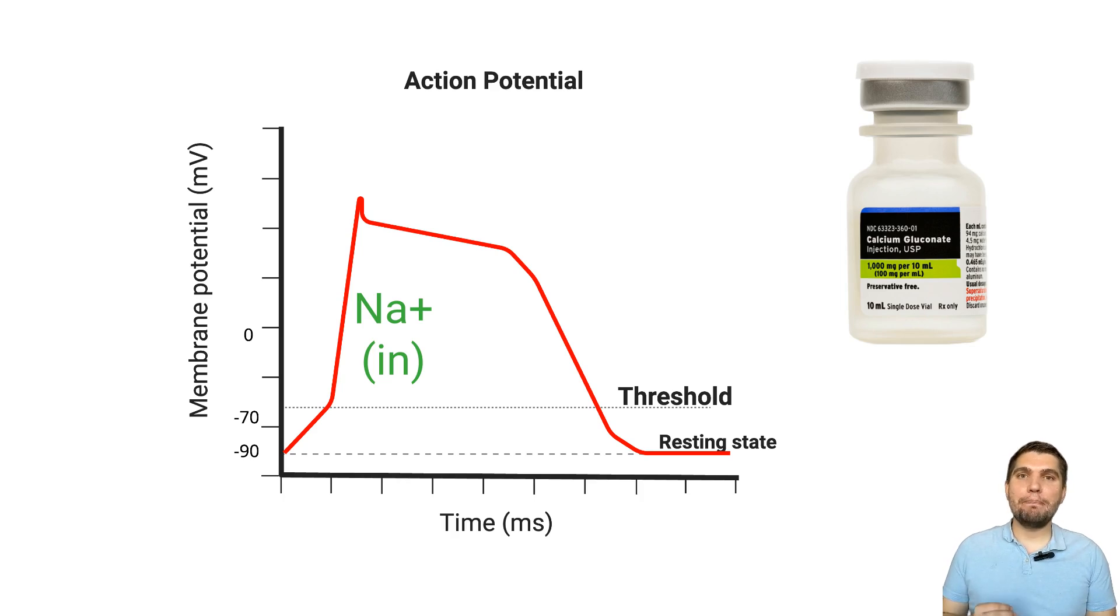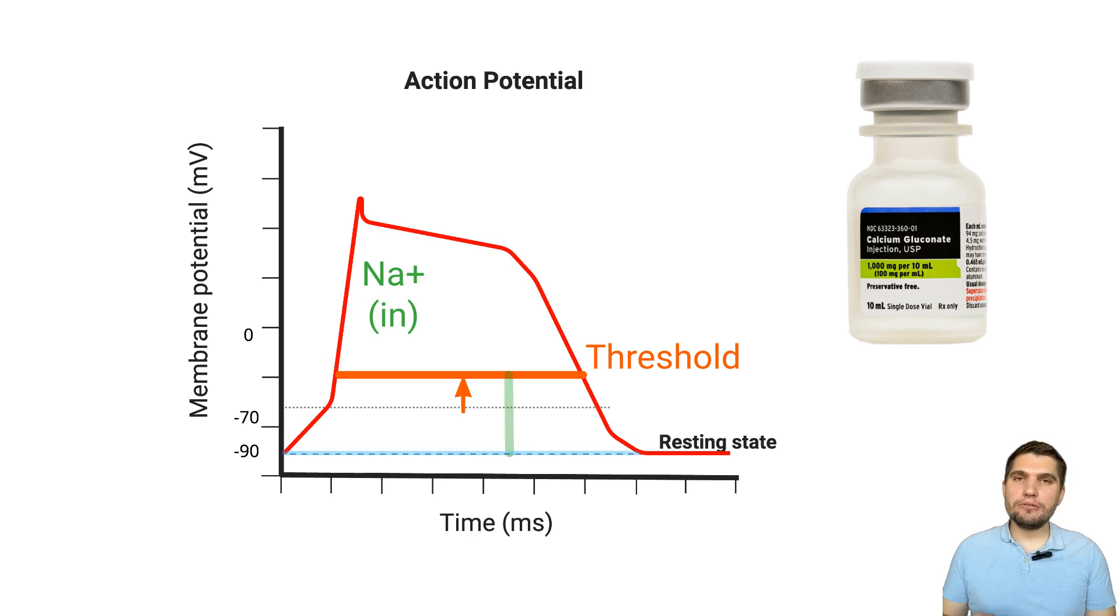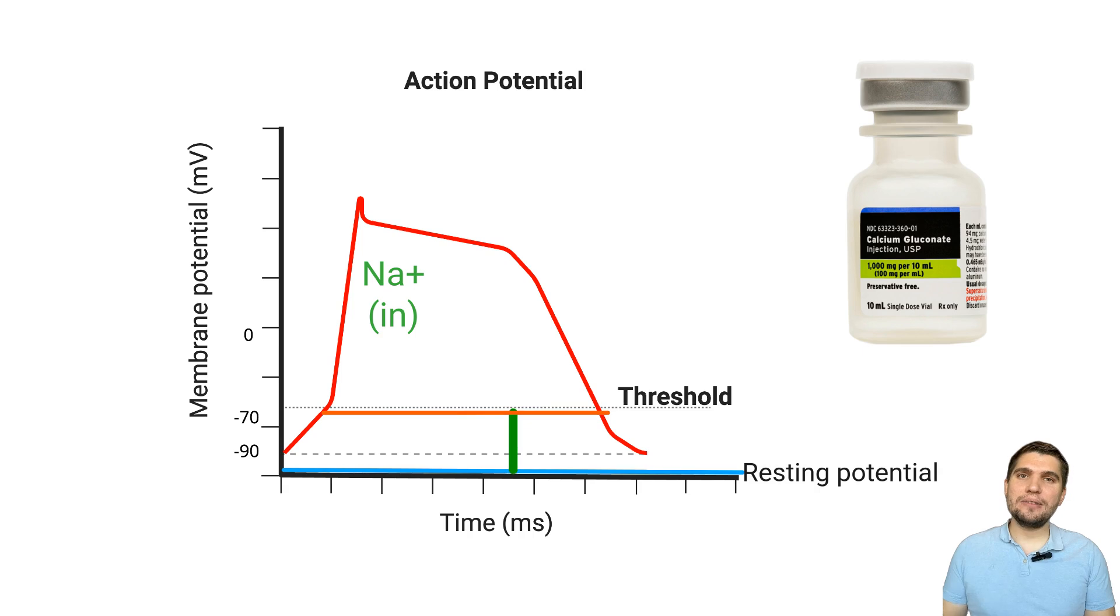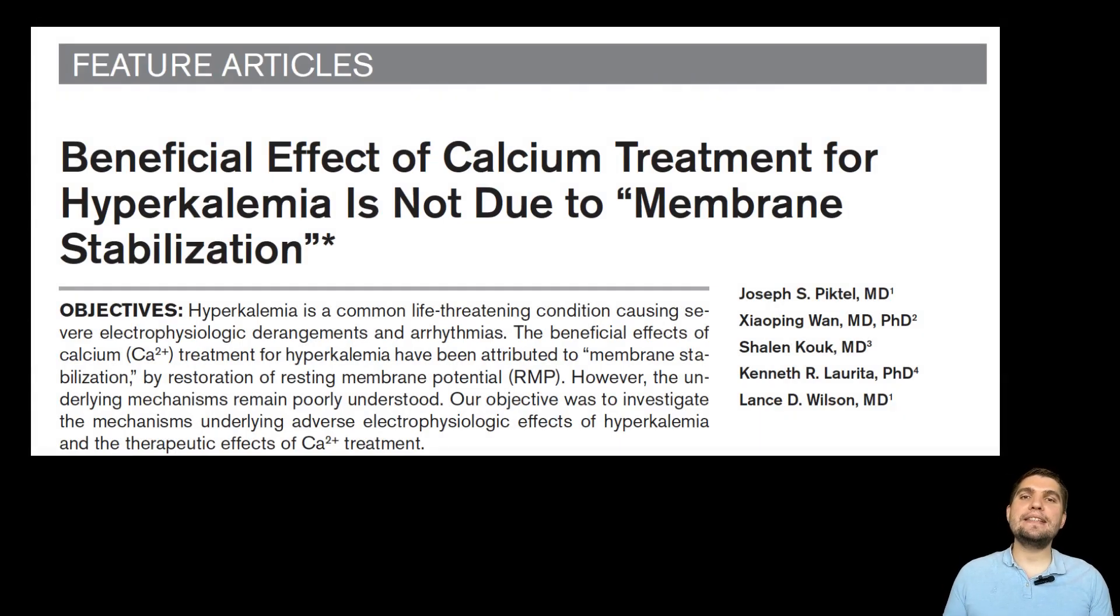Traditionally, we've explained the benefits of calcium gluconate administration in this population of patients by saying it stabilizes the cardiac membrane. This membrane stabilization theory proposed that calcium administration either raises the threshold potential by enhancing sodium channel function, increasing the gap between resting and threshold potential, which reduces cell excitability. Another alternative is that calcium somehow returns resting membrane potential to its more negative state. Both of these theories could explain the membrane stabilization effect. But here's where it gets interesting.